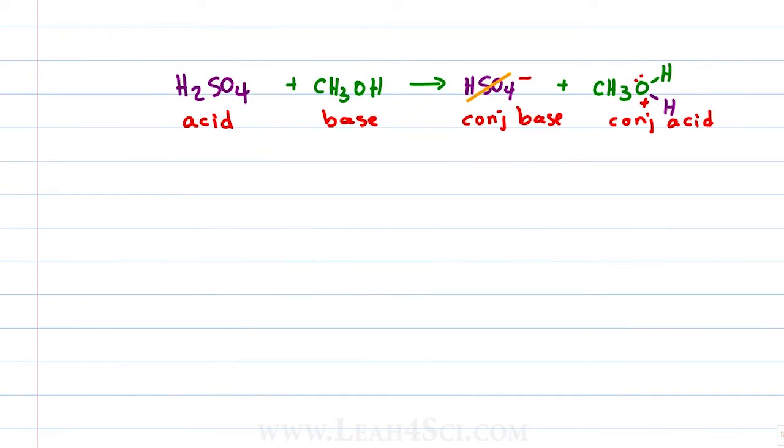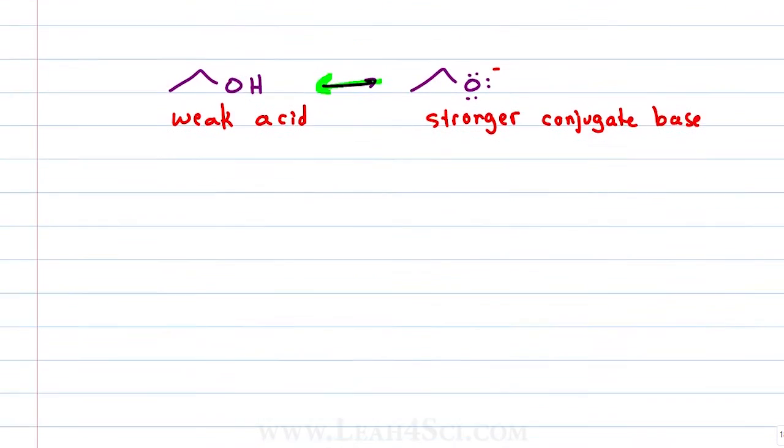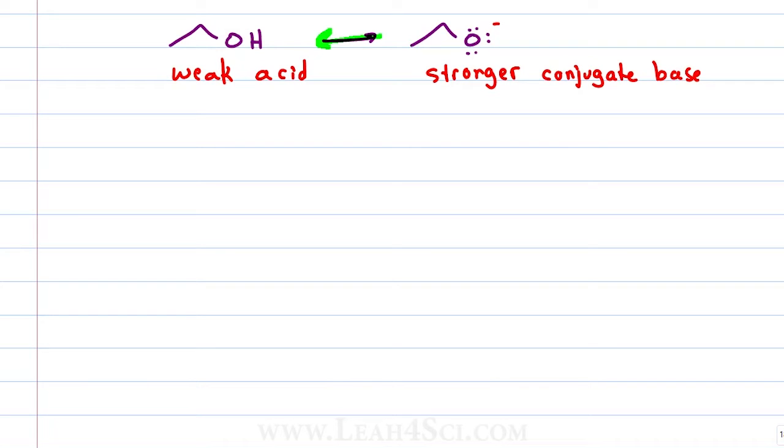Alcohols will easily be protonated to form the conjugate acid but they're less easily deprotonated to form a conjugate base. This is because a weak acid is going to form a stronger conjugate base and if given the opportunity, the strong conjugate base will seek out a proton in an attempt to reform the weaker and more stable acid. There are two common reactions to form the alkoxide anion.